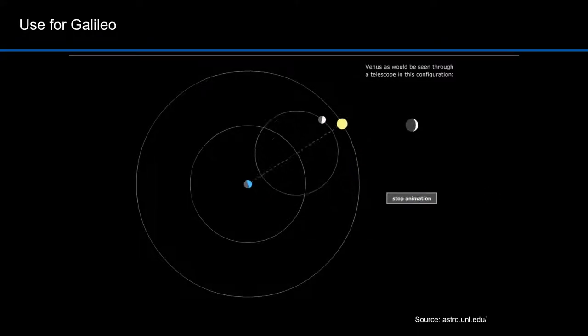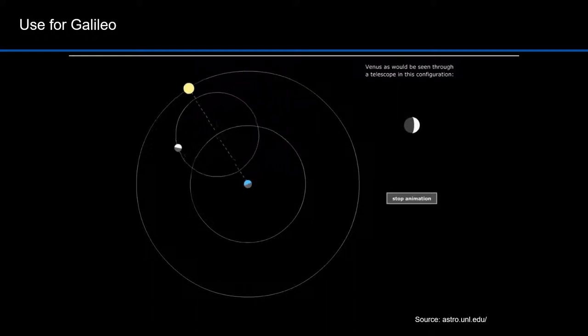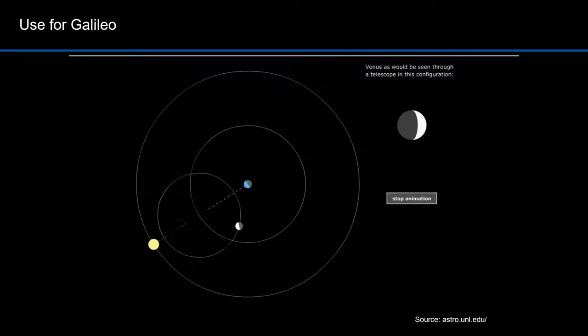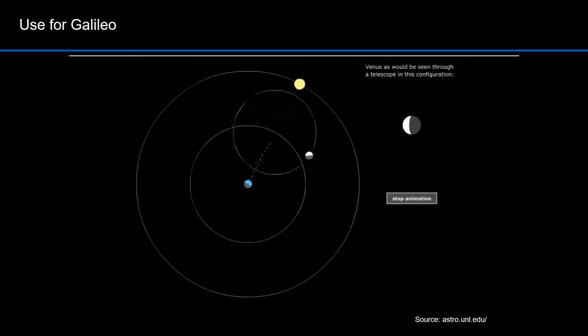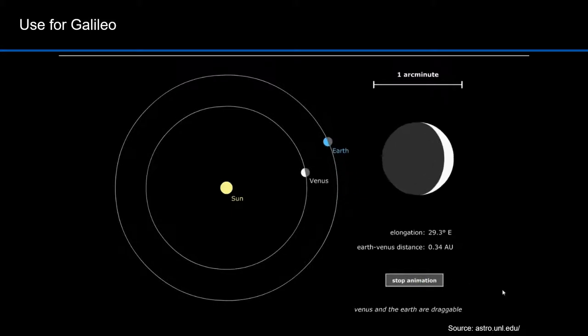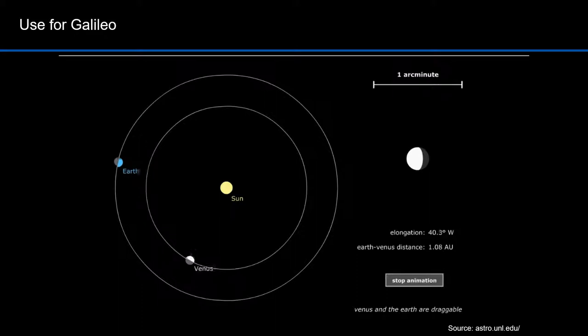Galileo also observed Venus as it went through its phases. Here's Venus and the Sun orbiting the Earth in a Ptolemaic system. Notice that you never see a full Venus. That isn't possible in this system. Notice, too, that when Venus is new, it's either very large or very small. It's at its largest when it's closest to the Earth and at its smallest when it's farthest from the Earth and closest to the Sun. In both cases, it's a new Venus, similar to a new moon that's totally dark. This is what the Ptolemaic system predicted. Here's what Galileo actually observed.